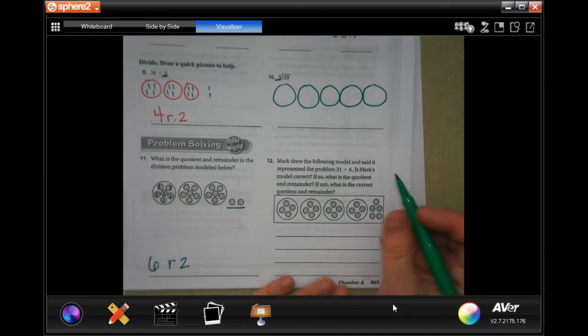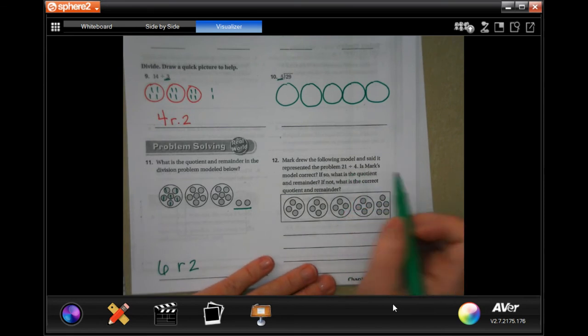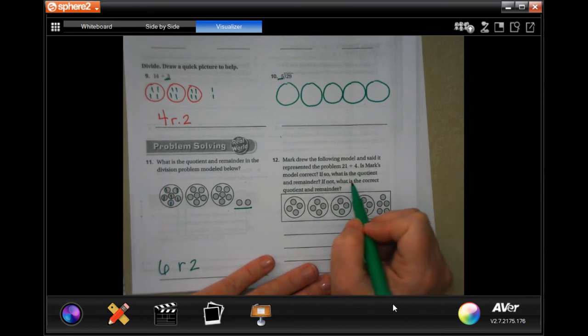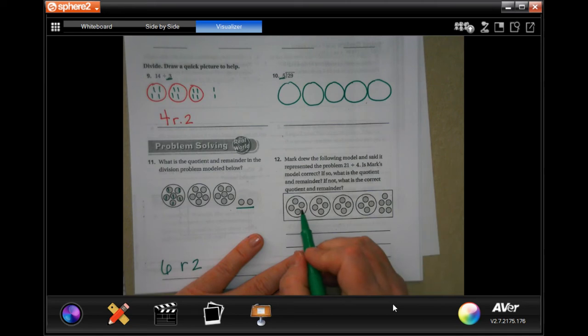Okay, so Mark drew the following model and said it represented the problem 21 divided by four. Is Mark's model correct? And if so, what is the quotient and remainder? If not, what is the quotient and remainder? So you see how it's split up between one, two, three, four. That means that if he has four of these, there should be one more.